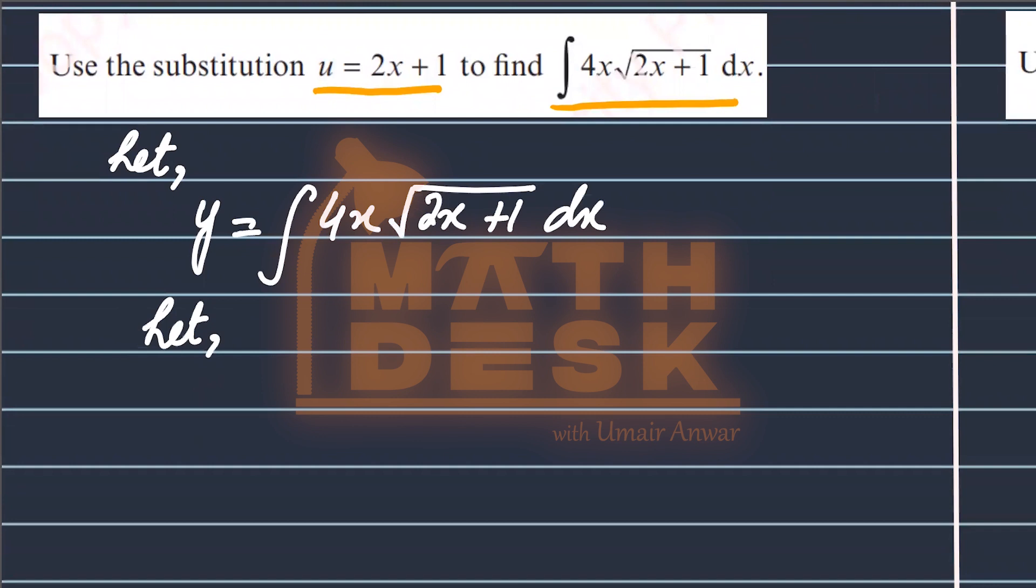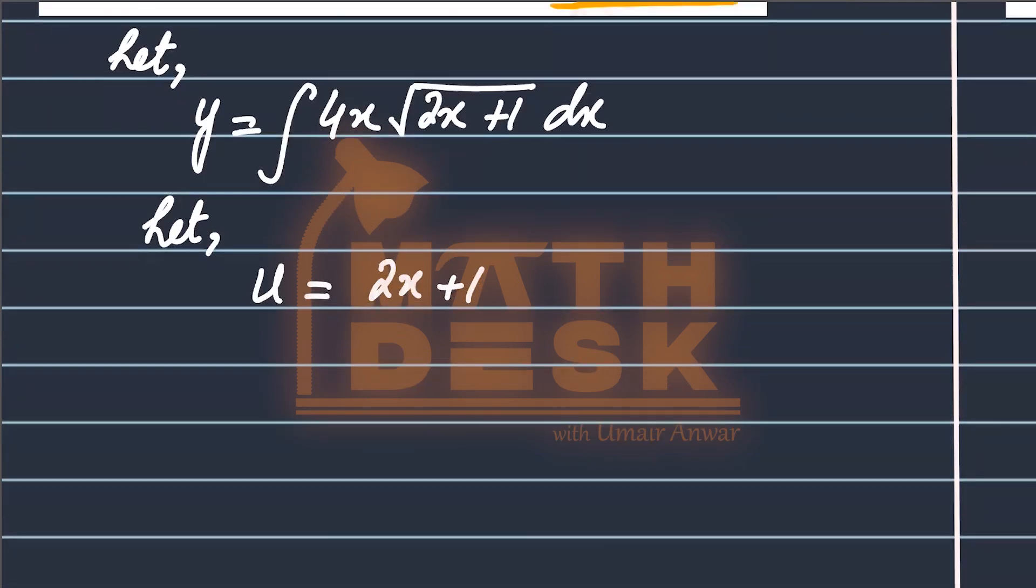We will do the substitution in this way, that we suppose that u is equal to 2x plus 1, like in the question in the instruction. After that, we will differentiate two sides.